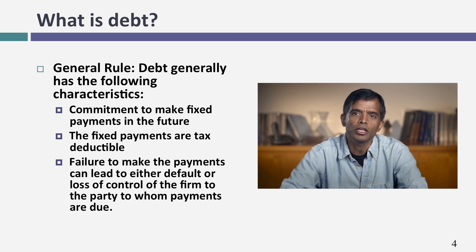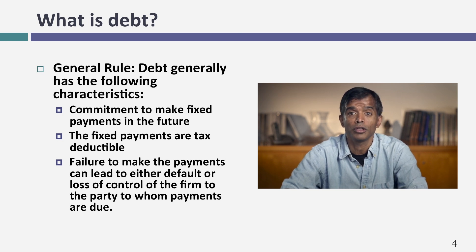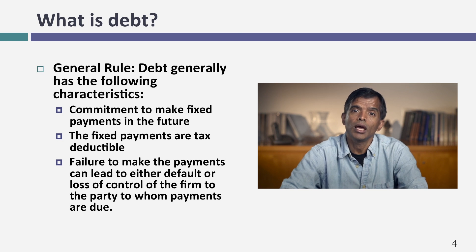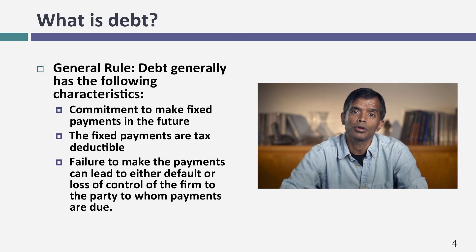When you issue shares, people might assume or even expect that you will pay dividends, but you're not contractually obligated to pay a dividend — so if you don't pay one, they can't sue you. If you borrow money, you enter into a contractual commitment to make interest and principal payments. Second, in most parts of the world, that contractual payment you make on debt is tax deductible. And third, if you fail on your contractual commitment, bad things happen to you — you lose control of the firm, somebody else gets voting rights. So the three characteristics are: fixed payment, tax deductible, loss of control.